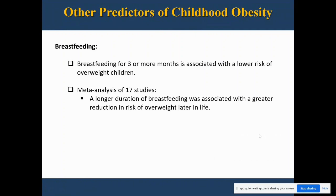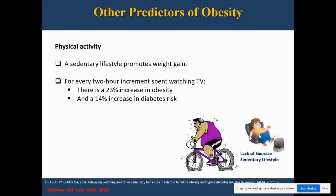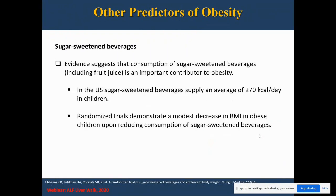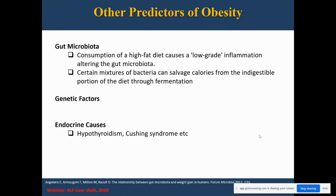Looking at other predictors: breastfeeding for three or more months is associated with a lower risk of overweight in children. Physical activity is important — a sedentary lifestyle promotes weight gain. Some data suggests that a two-hour increment in time spent watching television increases the risk of obesity by 23% and diabetes by almost 14%. Sleep deprivation is also considered a predictor for obesity. Increased intake of sugar-sweetened beverages is another predictor, along with gut microbiota, genetic factors, and endocrine factors.